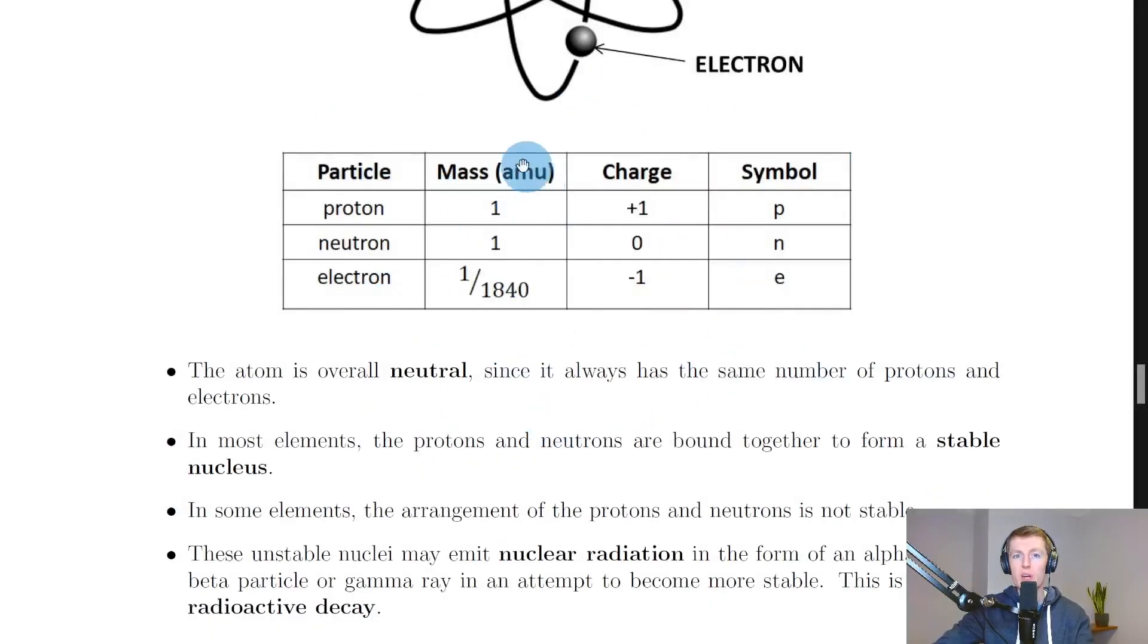Going back to the notes now, we have this summary table for protons, neutrons, and electrons in terms of their mass, charge, and symbol. For protons, we say it's got a mass of one AMU, where AMU stands for atomic mass unit, and it's got a charge of plus one because it's positively charged. We give the proton the symbol little p. For the neutron, it's also got a mass of one atomic mass unit, one AMU, but it's got a charge of zero because neutrons are neutral, and its symbol is lowercase n.